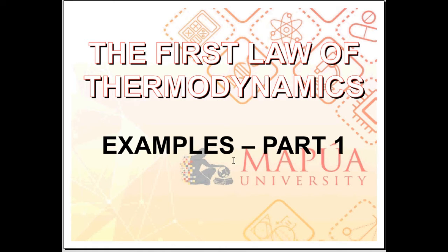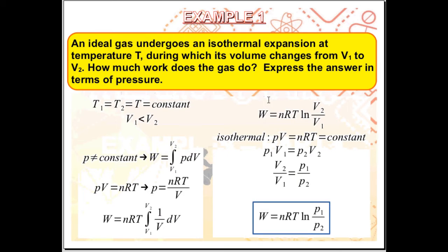You have examples part 1 in this video and then in the next video, we'll cover part 2 of the examples. Let's now have example 1. You have an ideal gas which undergoes an isothermal expansion at temperature T during which its volume changes from V1 to V2. How much work does the gas do? Express your answer in terms of pressure.